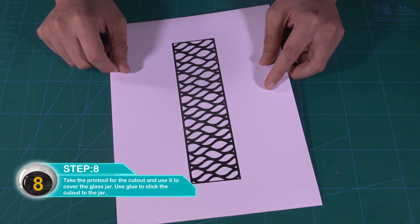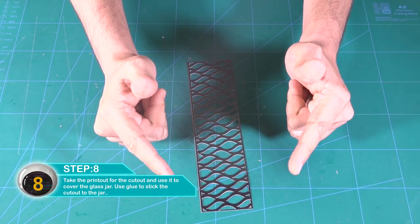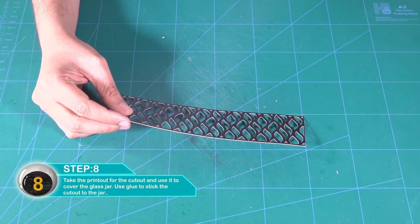Take the printout for the cutout and use it to cover the glass jar. Use glue to stick the cutout to the jar. You will find the template for the printout in the link in the description of this video.